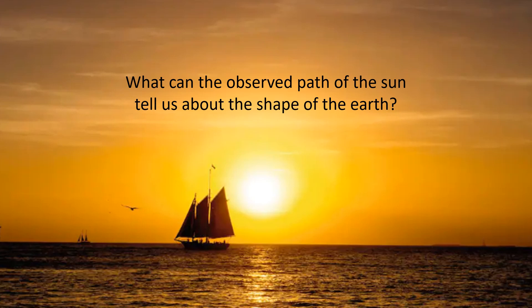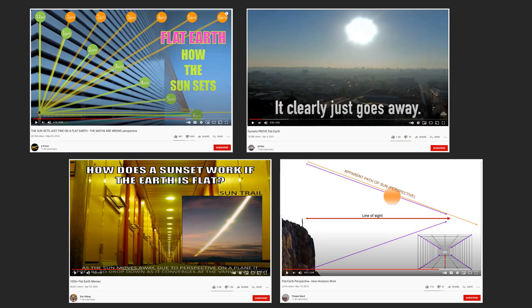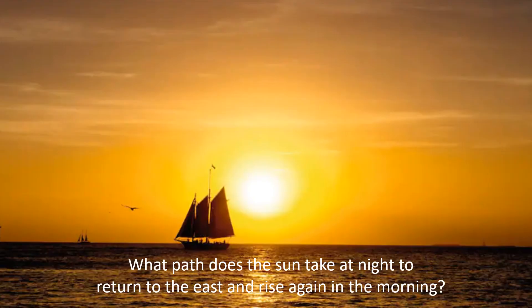Here's a simple question: what can the observed path of the sun tell us about the shape of the earth? Flat earthers will tell you that the sun sets due to perspective, but what they've never really thought about is what path does the sun take at night to return to the east to rise again in the morning?